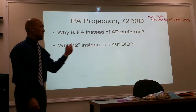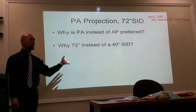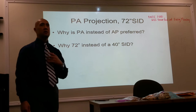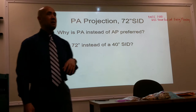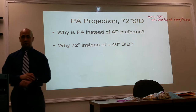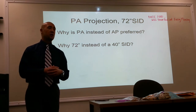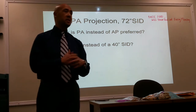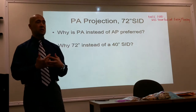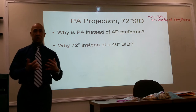Why do we do chest x-rays at 72 inches instead of 40? Because of the heart — to minimize magnification of the heart. Doctors are primarily looking at heart size in addition to the lungs. Heart size can be telltale if the patient is experiencing any type of cardiac pathology, especially cardiomegaly.